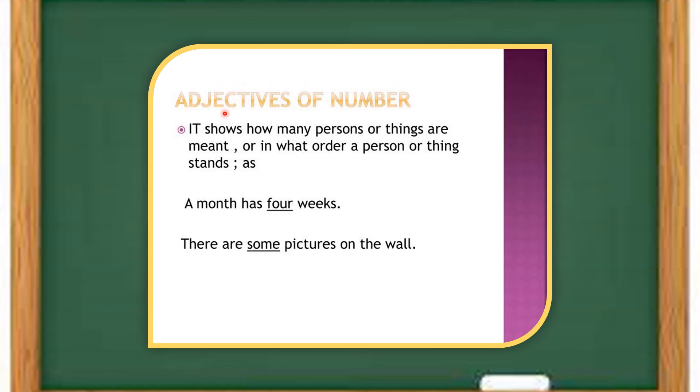Moving on to the next type of adjective, adjectives of numbers. It shows how many persons or things are meant, or in what order a person or thing stands. For example, a month has four weeks. Here, four is a number which serves as an adjective of number. In the next example, there are some pictures on the wall. Here, the sum stands for an adjective of number as well.